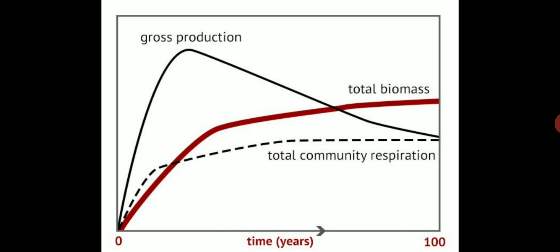As long as P exceeds R, organic matter and biomass will accumulate in the system and will become maximum in the mature or climax stage. Further production will not take place because more and more energy will be required to maintain the structure and dissipate disorder, and so less energy will be available for production.